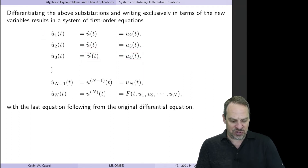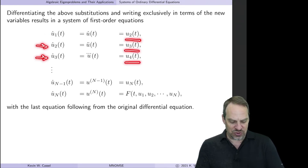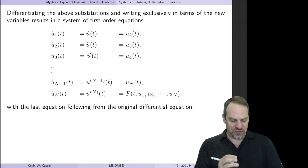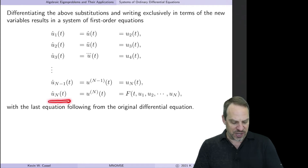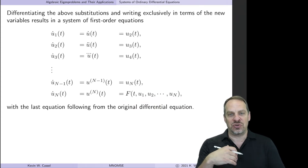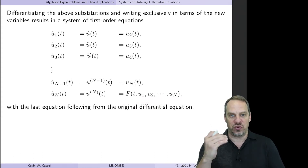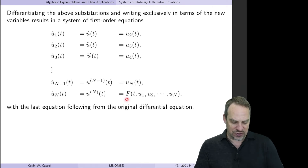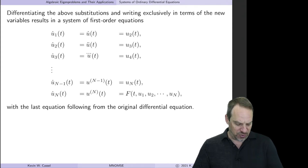So U1-dot equals U2, U2-dot equals U3, U3-dot equals U4, continuing through all equations. The very last equation is U_N-dot equals the original right-hand side F, remembering to substitute all U's and their derivatives for U1, U2 through UN, as shown here. We'll do an example so you can see how this works out clearly.